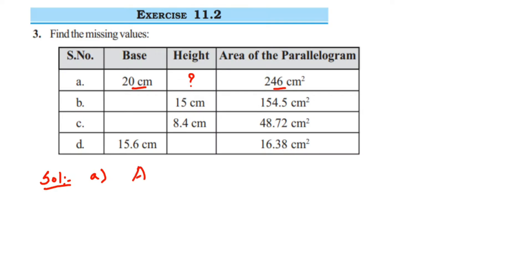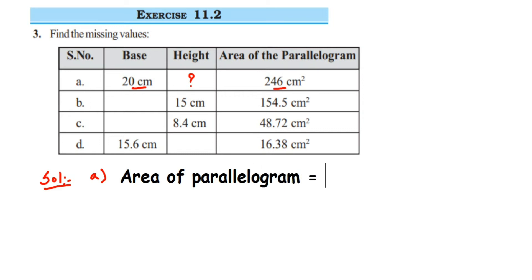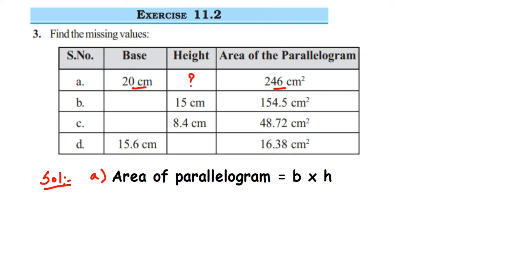This formula will remain the same for all the problems. In the first question, the area is given as 246 cm², the base is given as 20 cm, and we have to find the height. Let us substitute the values: base is 20 and height we don't know, so let's call it h. Area of parallelogram equals base × height, so 246 = 20 × h.